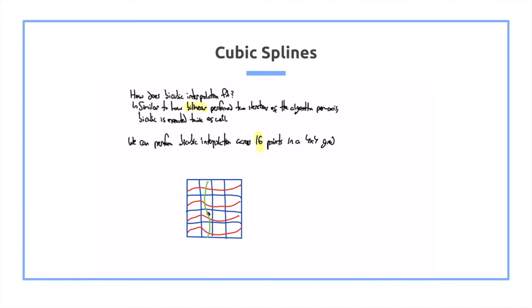Here we just simply look over 16 points in a 4x4 grid. First perform the different interpolations horizontally, and then finally we perform interpolation on the vertical axis, and then we generate and get our final result.